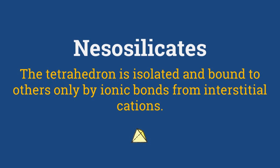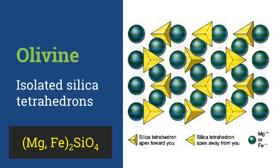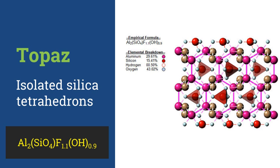Starting with the nesosilicates: silicate minerals where the SiO4 tetrahedra are isolated and are bound to each other only by ionic bonds from interstitial cations are called nesosilicates. The atomic packing is generally dense, causing high specific gravity and high hardness. The crystal habit is generally equidimensional and there is a lack of any pronounced cleavage. One example is olivine, where individual tetrahedrons are isolated and only joined by magnesium or iron cations. Topaz is also a nesosilicate. Other examples include zircon, garnet, andalusite, sillimanite and kyanite.